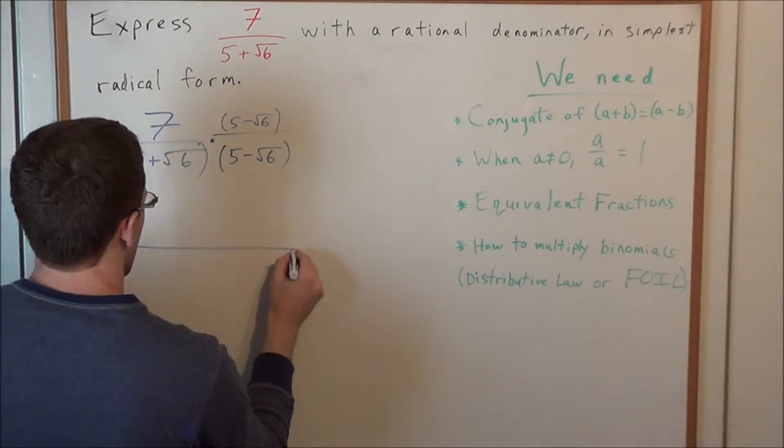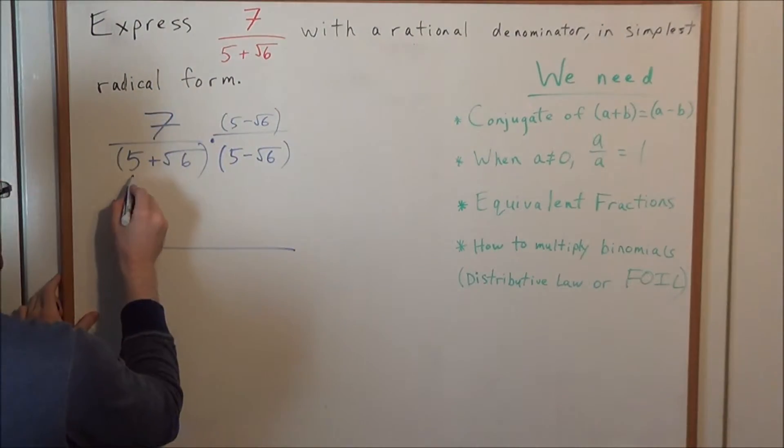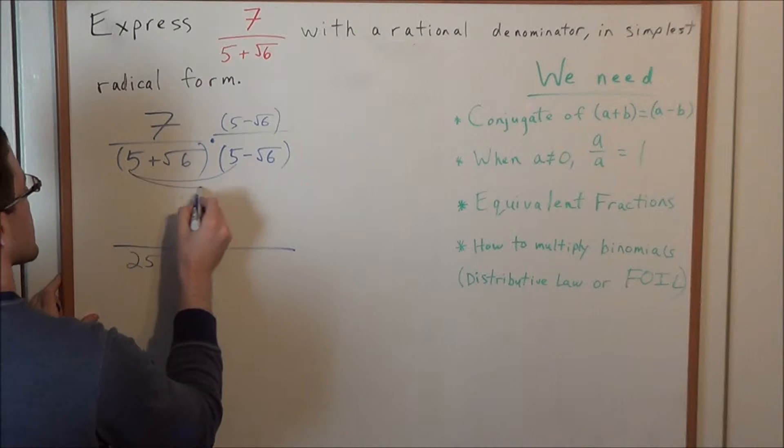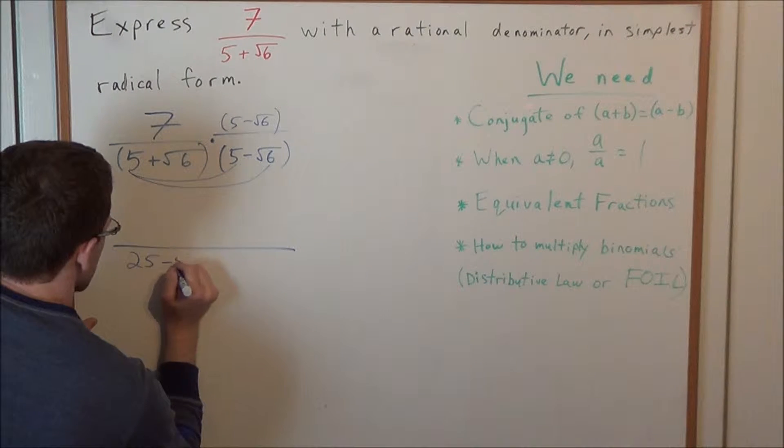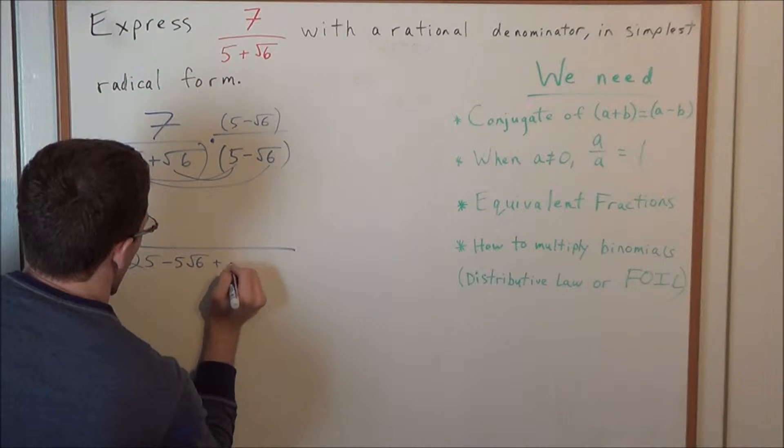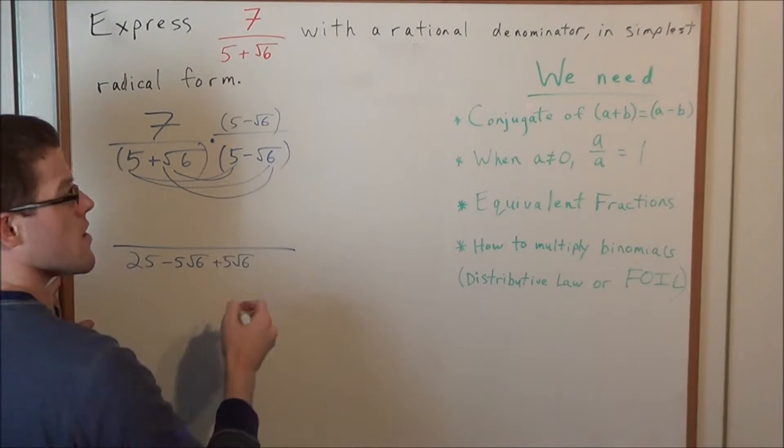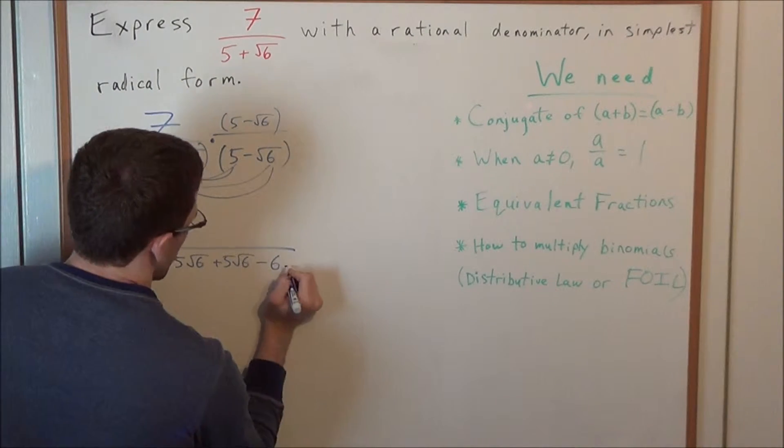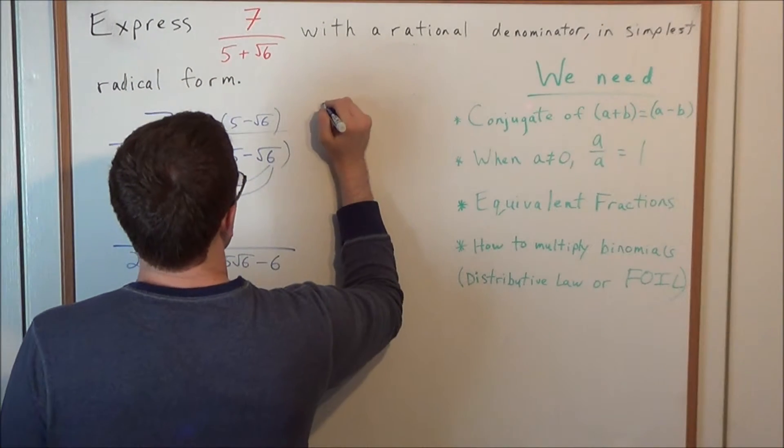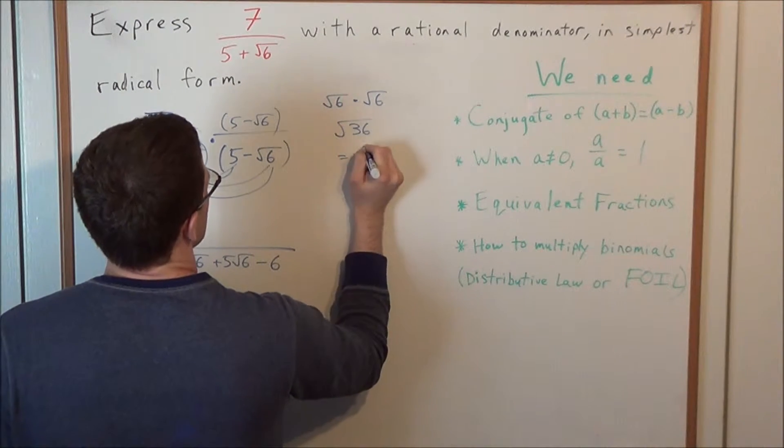So now we need to simplify. Let's multiply these two binomials. We could think about it in terms of foiling, if that makes it easier. We have 5 times 5 is 25. We have 5 times a minus radical 6 is equal to a minus 5 radical 6. We have 5 times a positive radical 6 is equal to a positive 5 radical 6. And finally, we have a positive radical 6 times a minus radical 6. This is going to give us a minus 6.